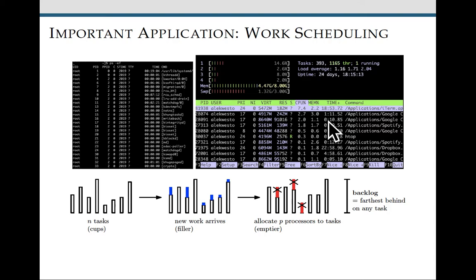So the work scheduling problem is to decide how to assign the processors to tasks to work on these tasks. And the cup game is an instance of work scheduling where the scheduler's goal is to minimize the farthest behind that you are on any task.